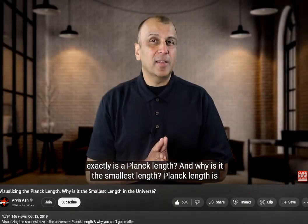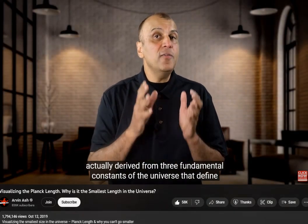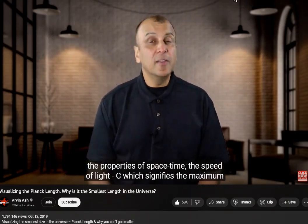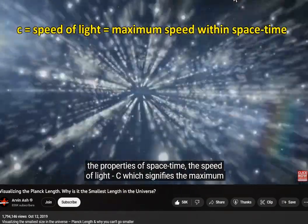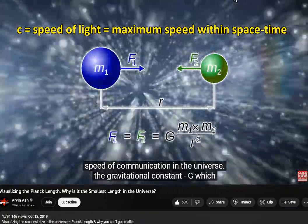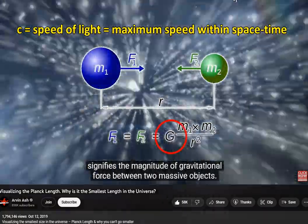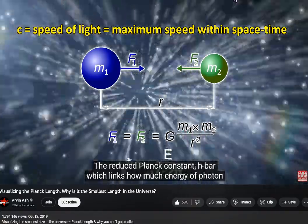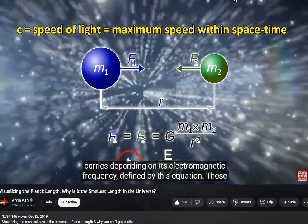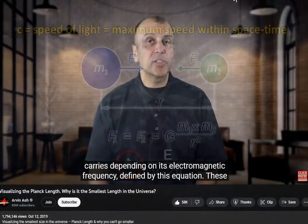But what exactly is a Planck length, and why is it the smallest length? Planck length is actually derived from three fundamental constants of the universe that define the properties of spacetime: the speed of light, c, which signifies the maximum speed of communication in the universe; the gravitational constant, G, which signifies the magnitude of gravitational force between two massive objects; and the reduced Planck constant, h-bar, which links how much energy a photon carries depending on its electromagnetic frequency, defined by this equation.